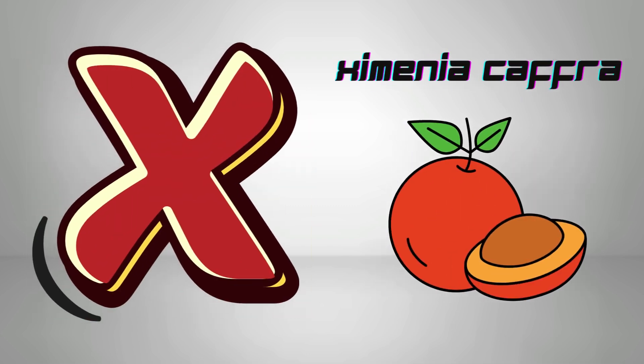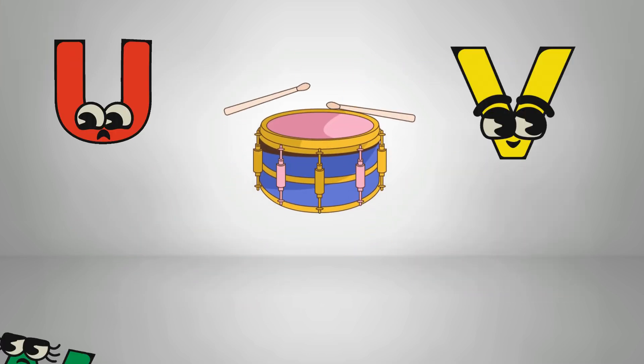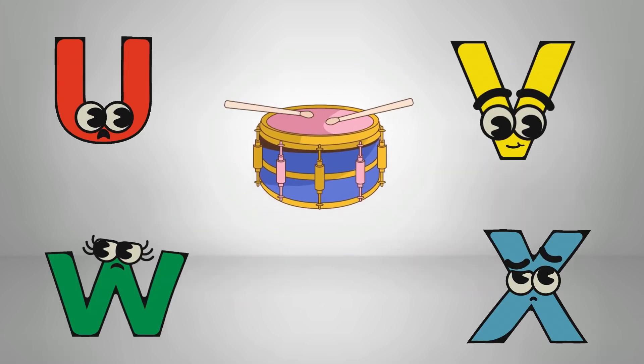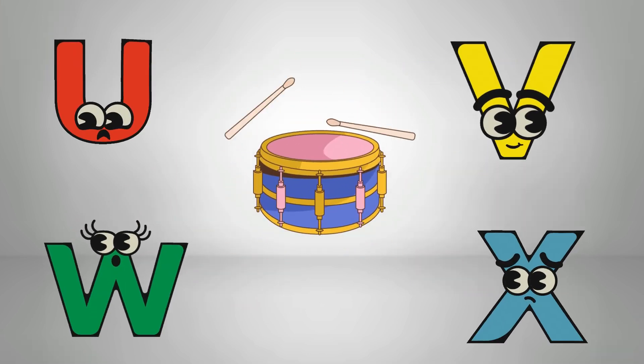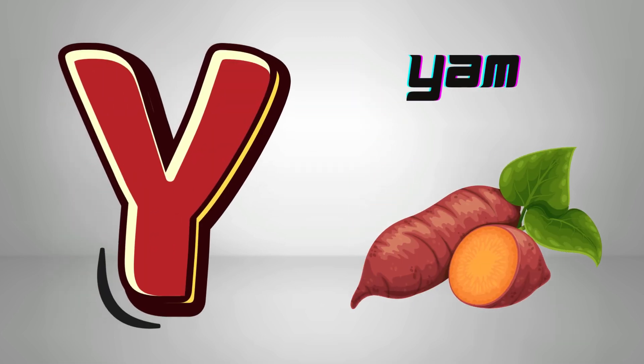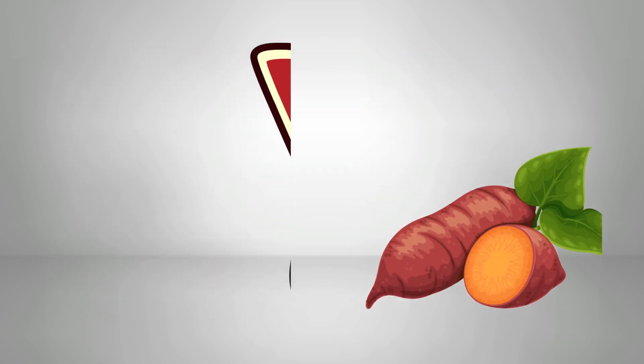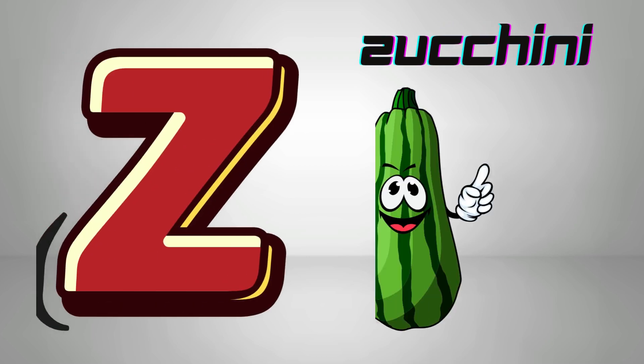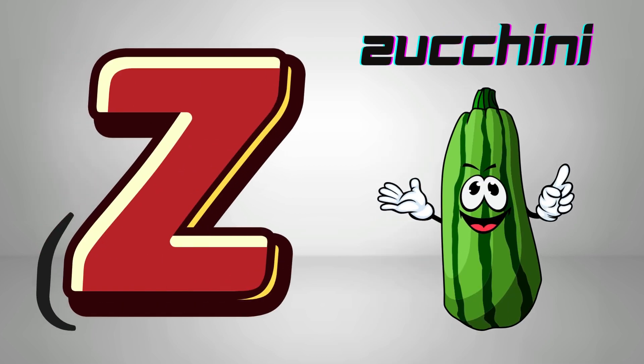X is for zymeniacap, z-z, zymeniacap. Y is for yam, ya-ya, yam. Z is for zucchini, z-z, zucchini.